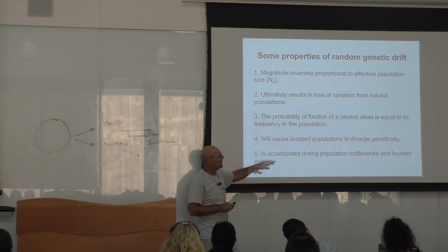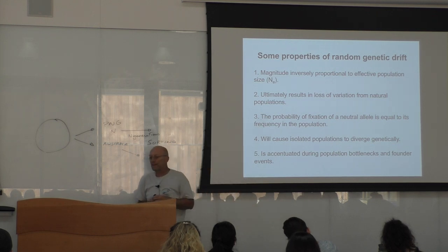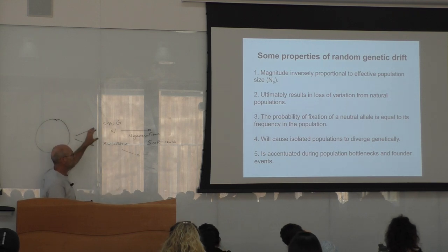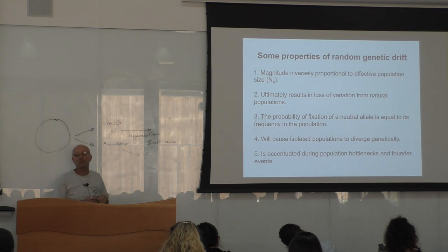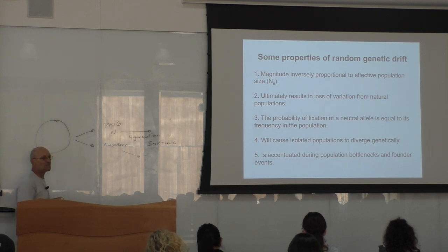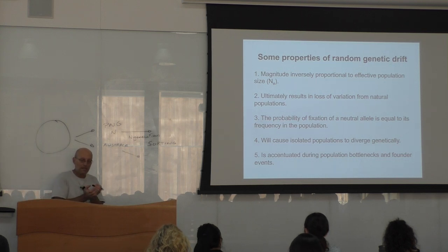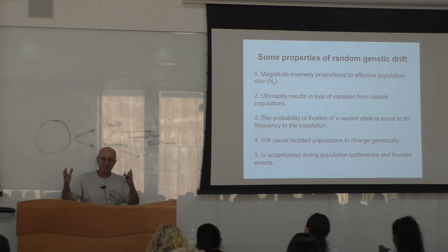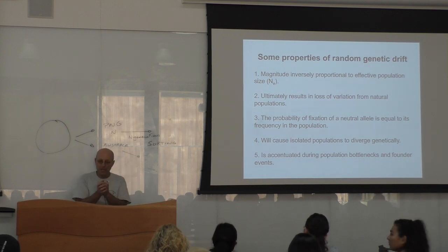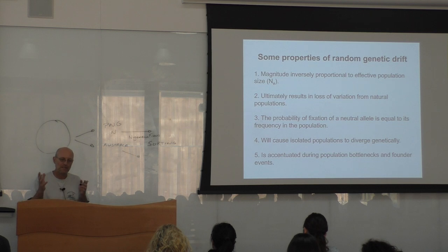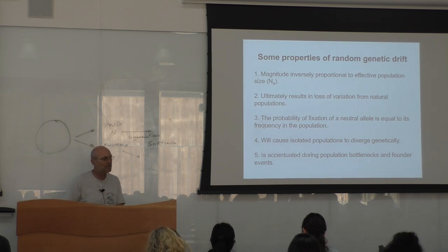Genetic drift is accentuated by population bottlenecks and founder effects. Founder effects occur when few individuals from a large population migrate to a new place. A bottleneck is different: a population crashes — due to plague or other catastrophe — leaving only a few survivors. That's biologically different from a founder effect but has similar genetic consequences. These are the two main scenarios where genetic drift has extreme effects.